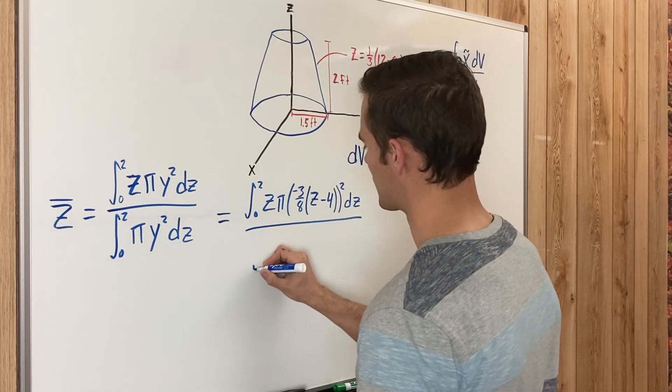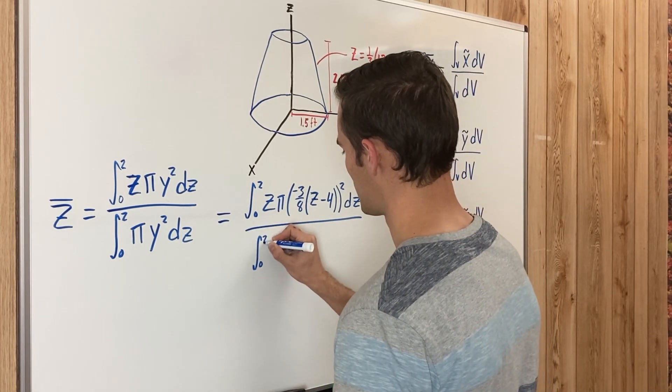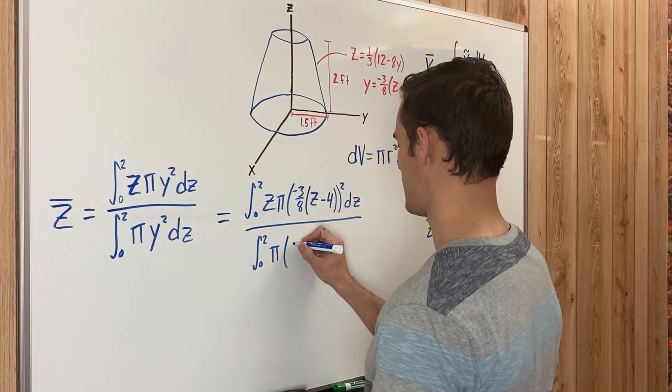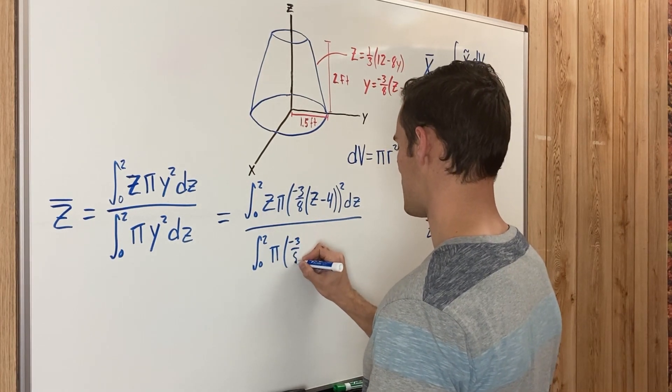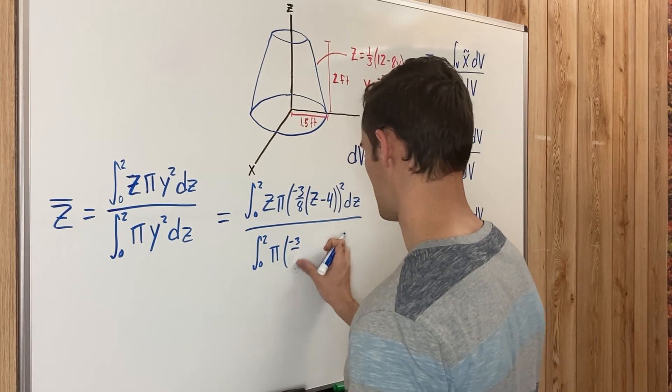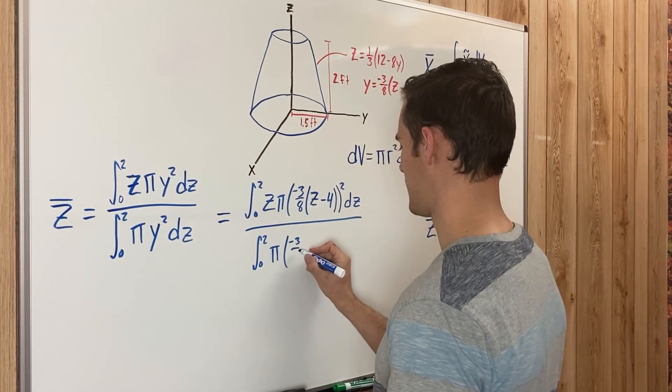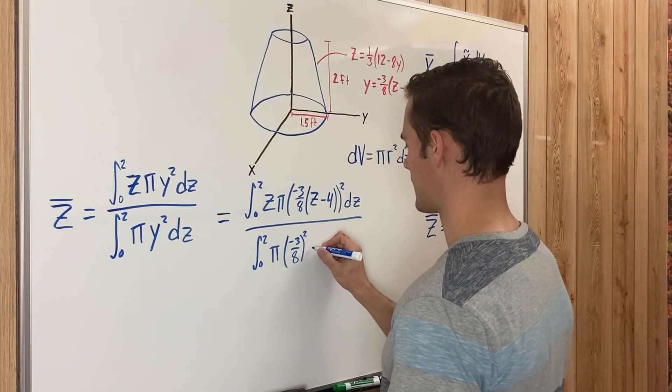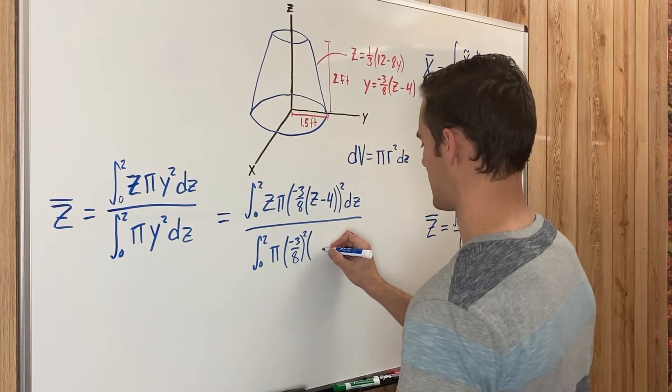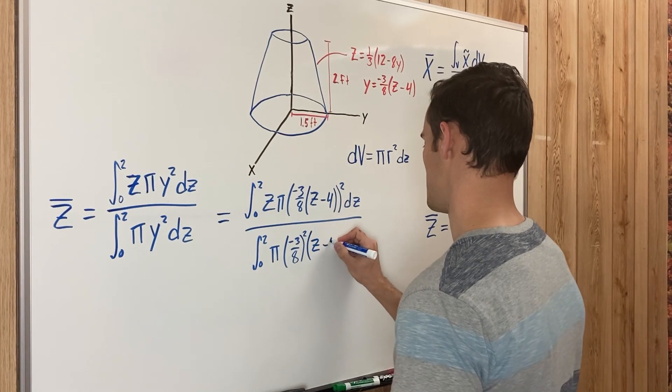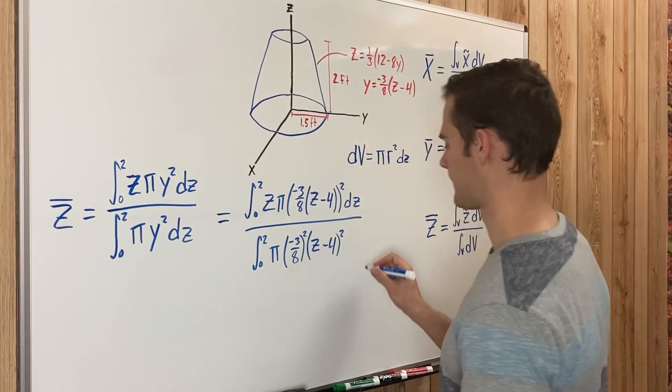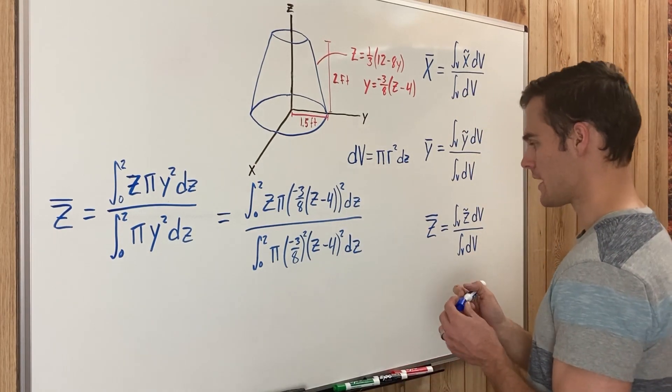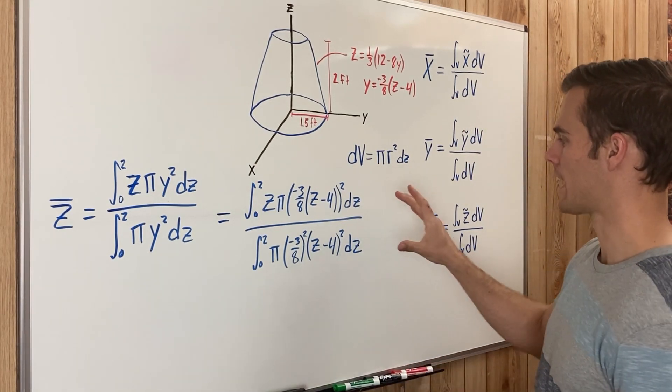All divided by the integral from zero to two again of π times negative three-eighths. Now it's the same as on the top, but I'm going to write it a little bit differently just to show you that it can be. When you're pulling this three-eighths out, it can be squared, and then this can just be Z minus four squared, dz.